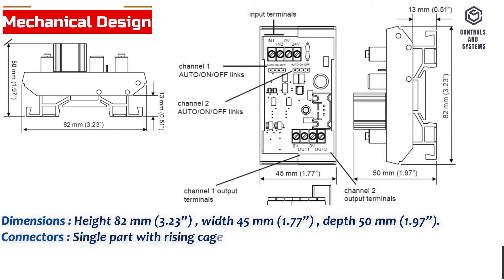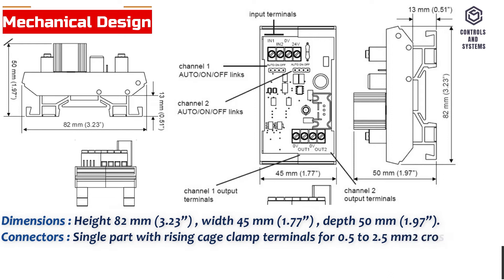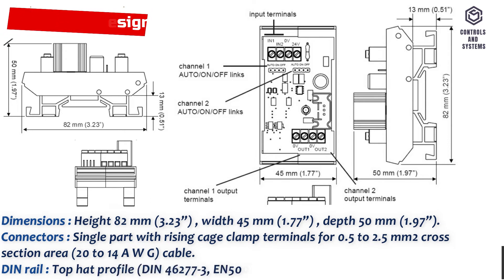Connectors: Single part with rising cage clamp terminals for 0.5 to 2.5 square millimeters cross section area, 20 to 14 AWG cable. DIN rail top hat profile, DIN 46,277-3, EN 50,022, BS 5584-1978.